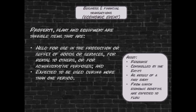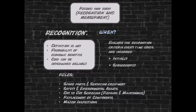Property, Plant and Equipment is an asset as defined in the framework and is usually an integral part of the operating activities of an entity. More often than not, it represents a significant amount on a statement of financial position. An entity should evaluate any costs incurred, whether initially or subsequently, against the recognition criteria. In other words, the probability of the flow of economic benefit and the reliable measurement of costs should be evaluated. IAS 16 includes specific rules for instances where the evaluation of the recognition criteria might be problematic.